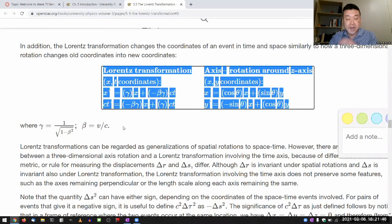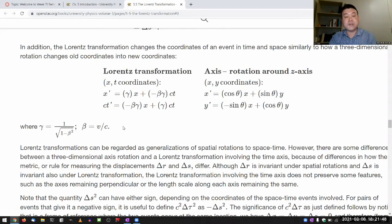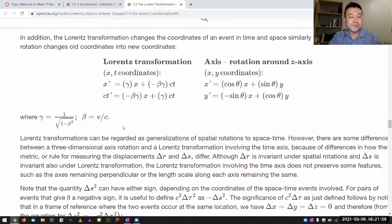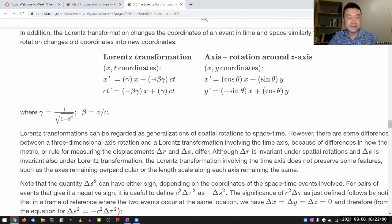That space and time as one unified thing is something that obeys certain geometric rules, which is a different set of rules than geometry governing space only. You can see that in the key distinctions here.